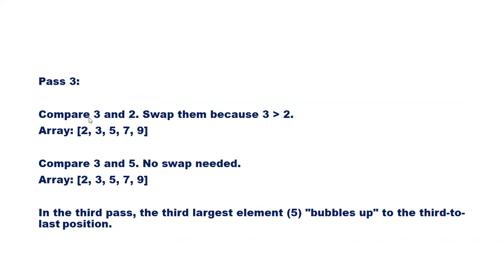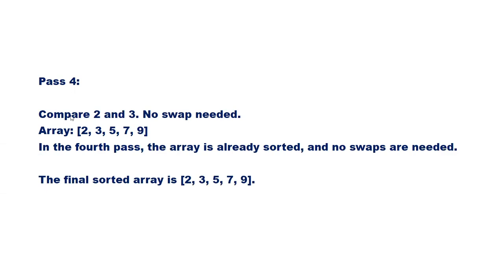Pass number 3: start from the beginning. Compare 3 and 2 — swap them because 3 is greater than 2. Array becomes [2, 3, 5, 7, 9]. Compare 3 and 5 — no swap needed. In the third pass, the third largest element 5 bubbles up to the third-to-last position. Now 5, 7, and 9 are in the correct position. Pass 4: compare 2 and 3 — no swap needed. In the fourth pass the array is already sorted. The final sorted array is 2, 3, 5, 7, 9.